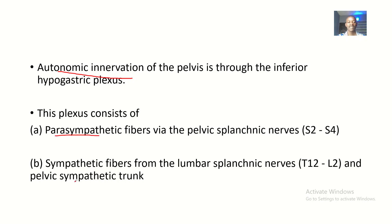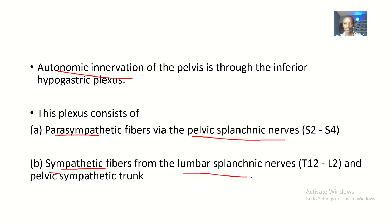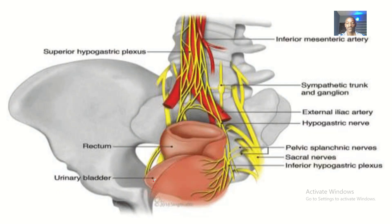The parasympathetic fibers are through the pelvic splanchnic nerves, which are S2 to S4. The sympathetic fibers are through the lumbar splanchnic nerves, which is T12 to L2, and also the pelvic sympathetic trunk.